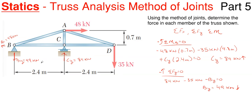Now that I have the reactions I can start solving for the members of the truss. I only have five members to solve for. We're going to use the method of joints — you start at one of your joints, isolate that joint, and only concern yourself with any reactions, applied forces, or members connecting to that joint. So if I'm looking at joint B, I only concern myself with the 48 kilonewtons from B sub X, the 49 kilonewtons from B sub Y, member BC, and member BA. Then I sum forces in the X and Y direction at point B.